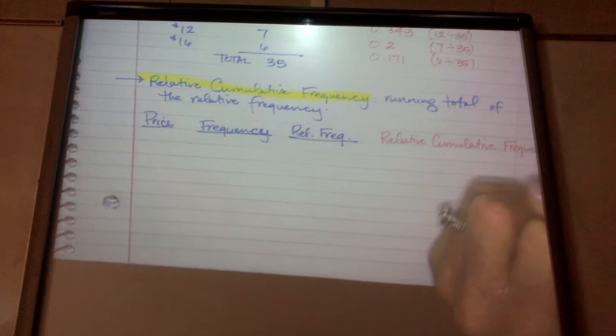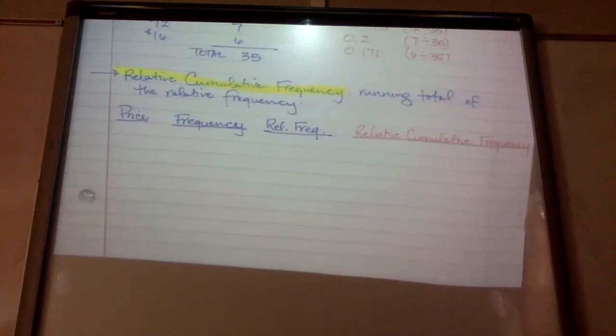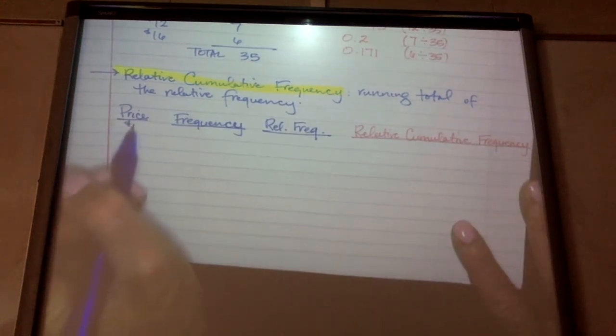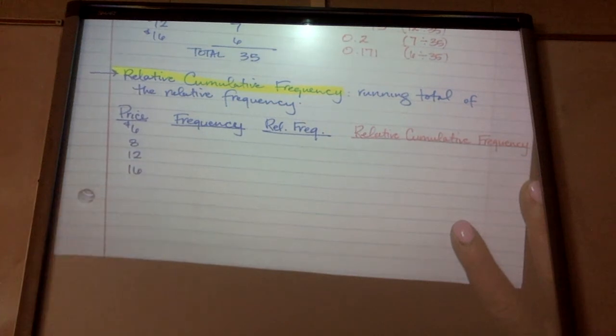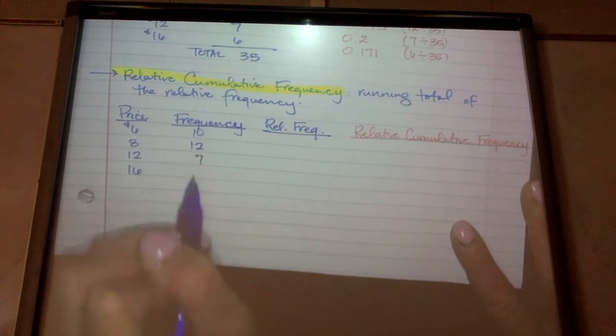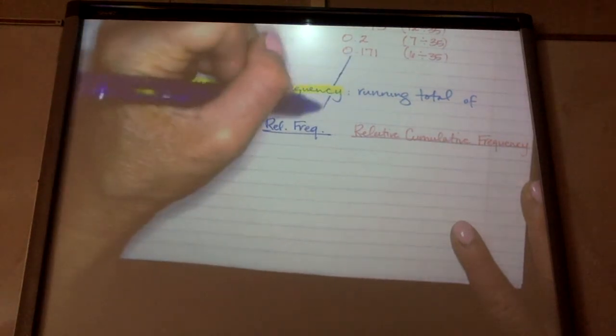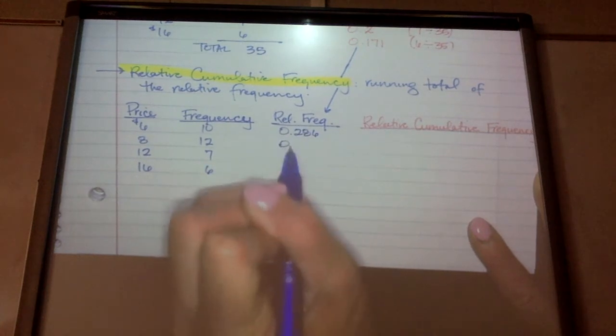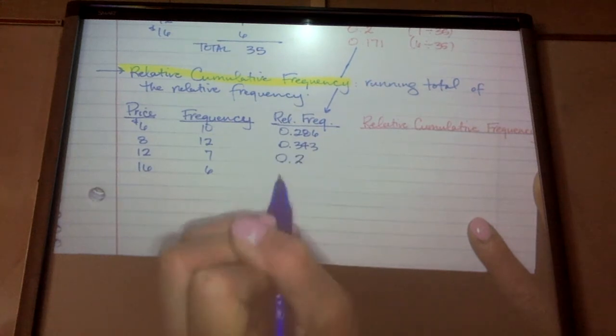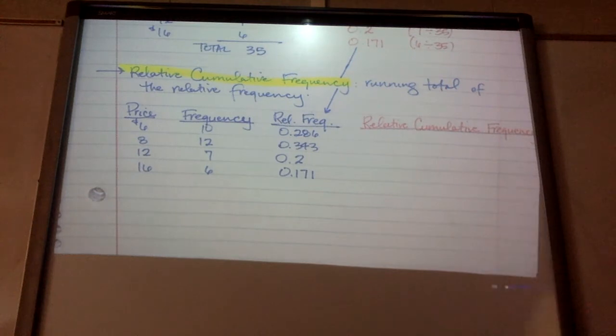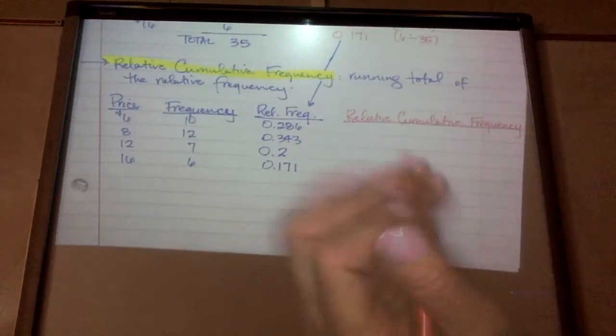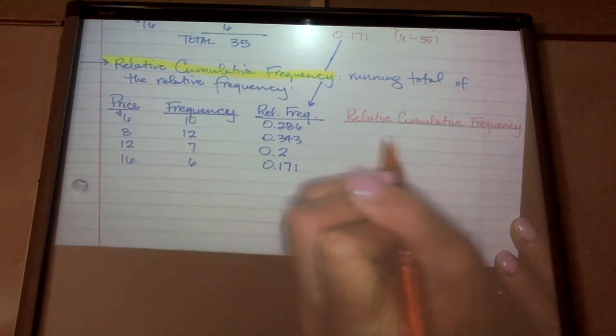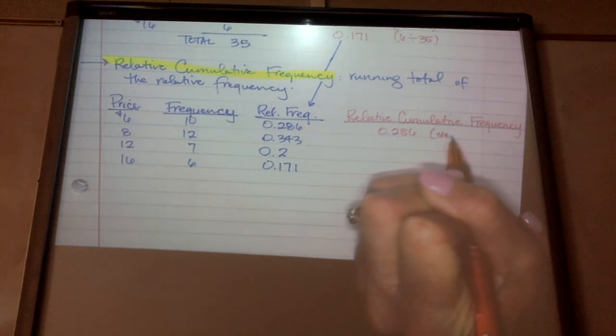And I'm just going to use shorthand. And then this current one we're going over is relative cumulative frequency. Price of my plants, I've got a $6, $8, $12, $16 plant. 10 of these were purchased, 12 of these, 7 of these, 6 of these. Now I'm bringing down the table I just completed in the last example. I'm going to bring that down. So 0.286, 0.343, 0.2, and 0.171. So this term is pretty simple. Anytime I see that cumulative, I know I'm just adding, I'm doing a running total. I'm simply adding things. So for this first one, I'm going to start with the first piece of data, which is 0.286. So start with first.